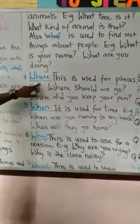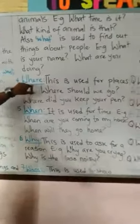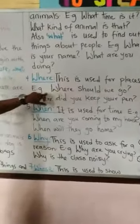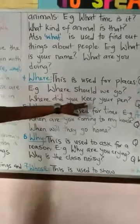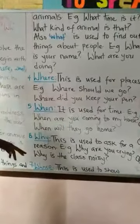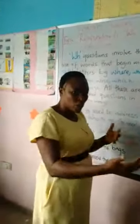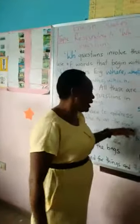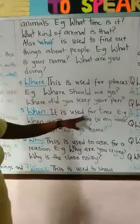Number four: WHERE — used for place, to ask the position of things. For example, 'Where should we go?', 'Where did you keep your pen?', 'Where do you live?', 'Where have you been?' When responding to questions like that, you tell where you have been.